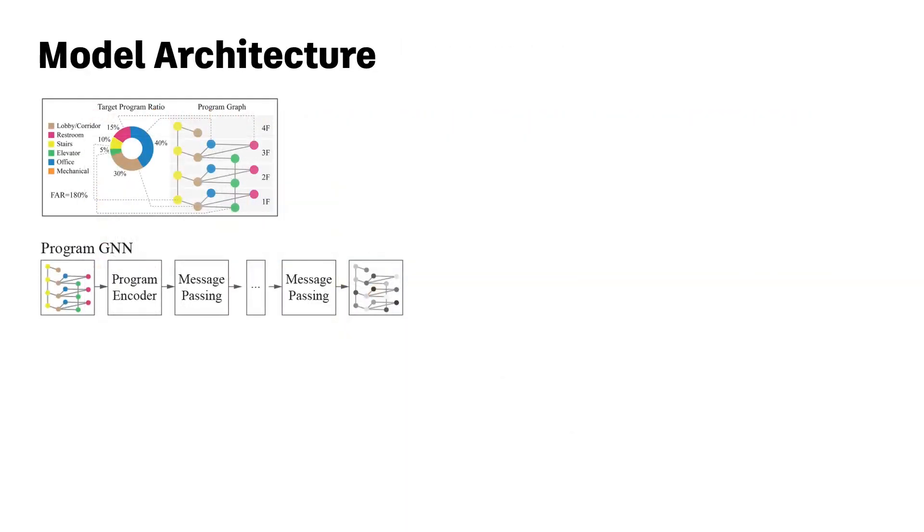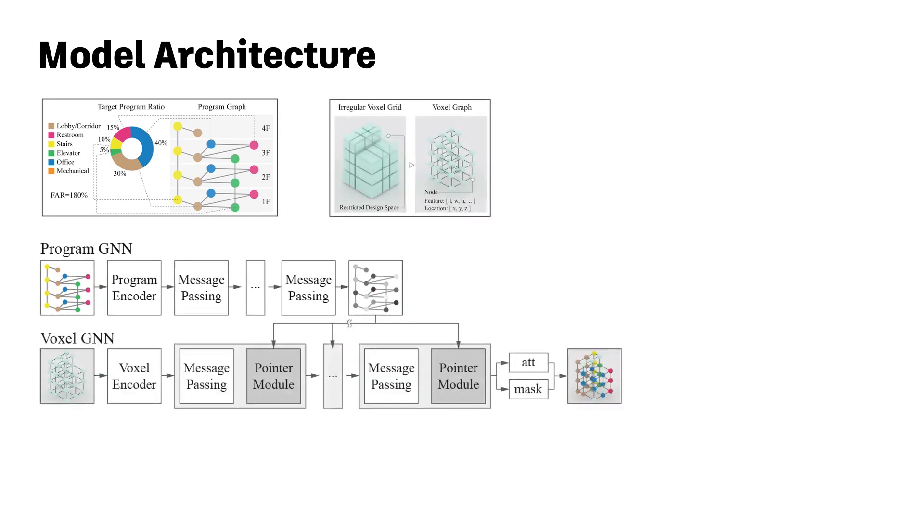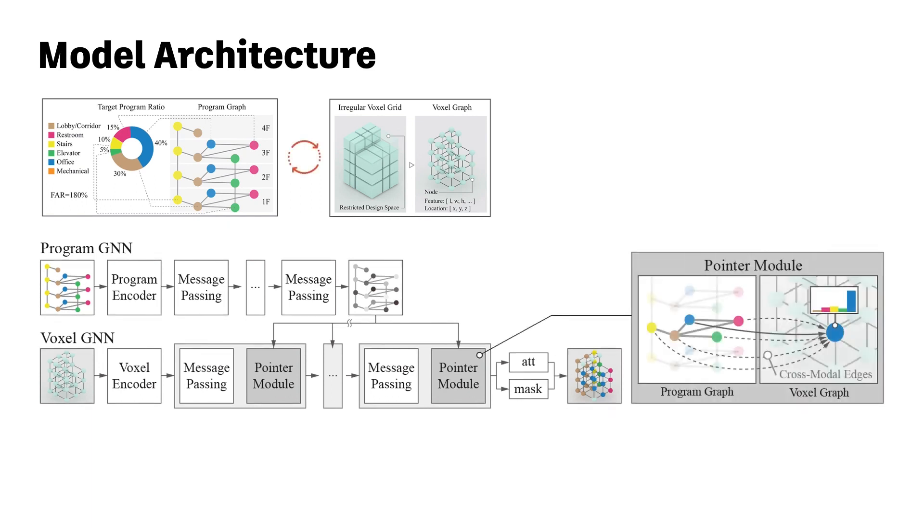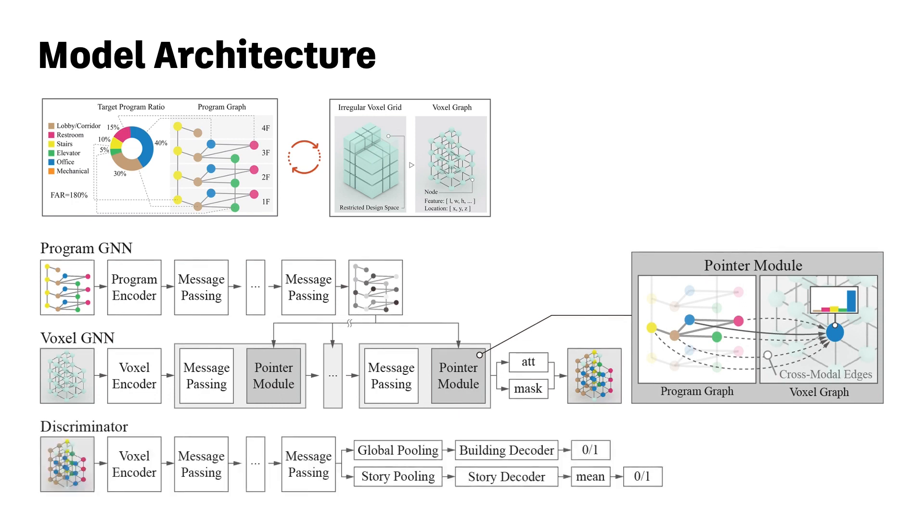To do so, our model first does message passing on the program graph and then message passing on the voxel graph. We use the cross-model pointer module to bridge the program and voxel graph and compute the probability over a dynamic set of program nodes for each voxel. The output is then evaluated by a discriminator looking at both the per-building and per-story information.